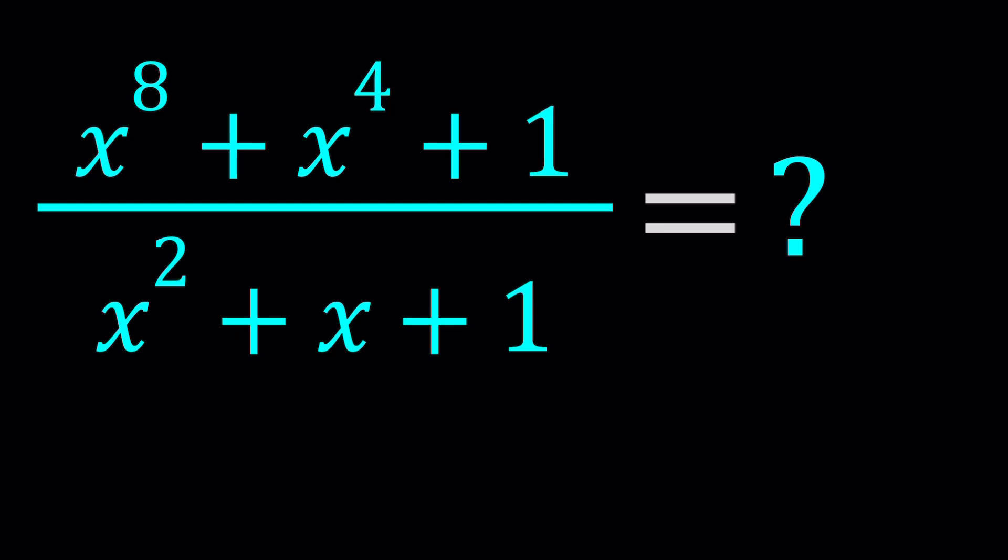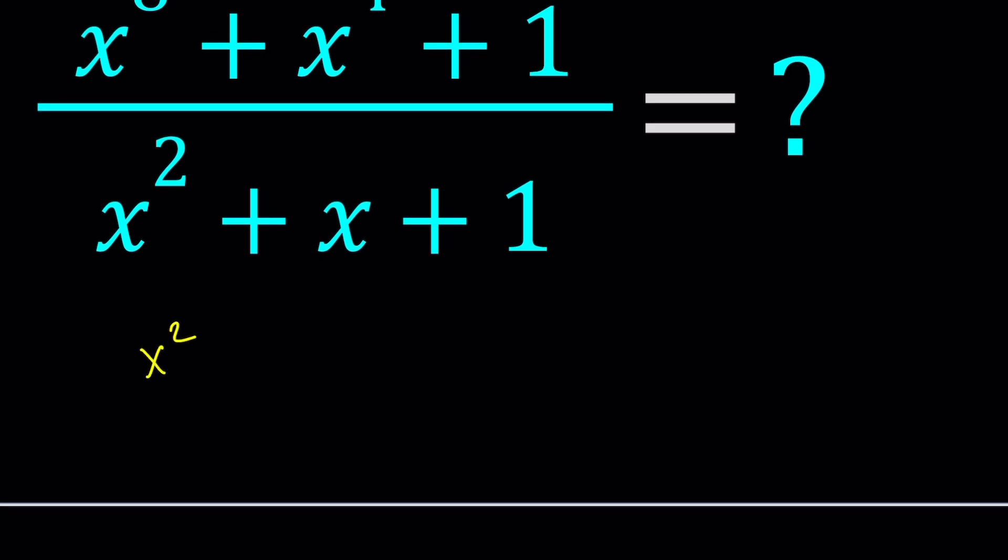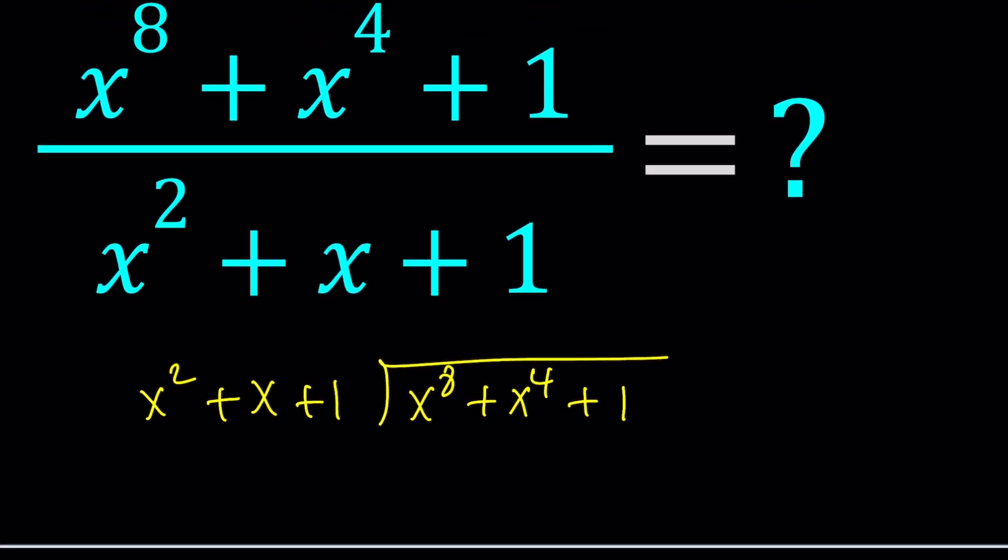So whenever you're trying to divide a polynomial by another polynomial, you can just divide without getting into the nitty-gritty of algebra. So here's how it works. The way you write it actually depends on where you live, but in the United States this is how we express division. So now we're going to basically divide x to the 8th plus x to the 4th plus 1 by that.